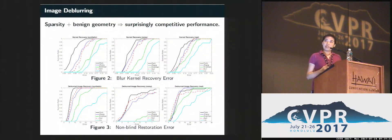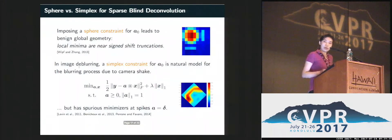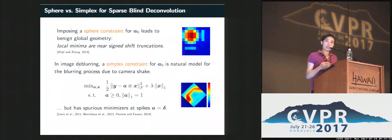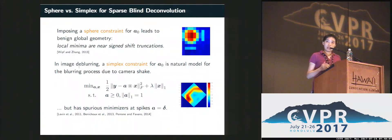We also conducted more extensive experiments on image deblurring. It's surprising that once we cast the problem on a sphere, we have the right geometry, allowing us to exploit the sparsity prior with competitive results. Our algorithm also explains the observed difference between sphere and simplex sparse blind deconvolution. In image deblurring, the simplex is a more natural model for the blur kernel, as it better captures camera shake. However, it is computationally challenging because there is a sparse minimizer where A is just a spike and the recovered X is not actually sparse. In contrast, casting on the sphere — though less natural from a modeling perspective — provides better geometry and a better algorithm.